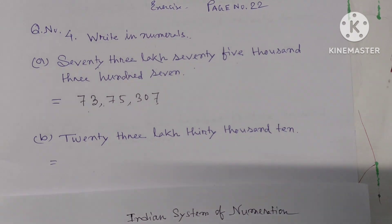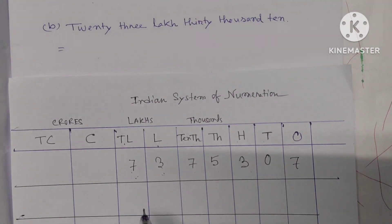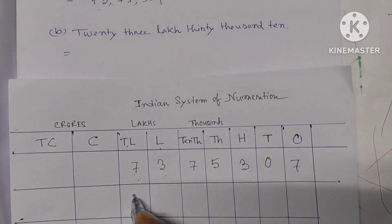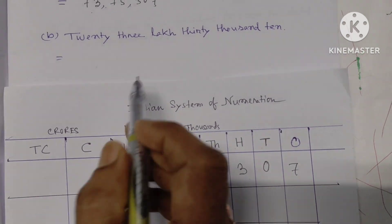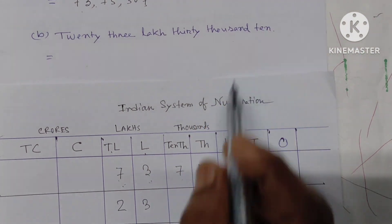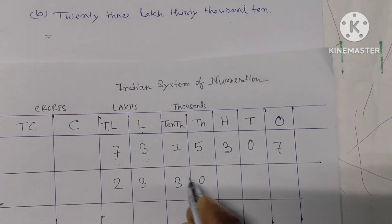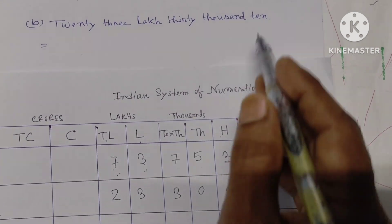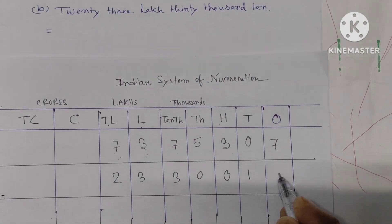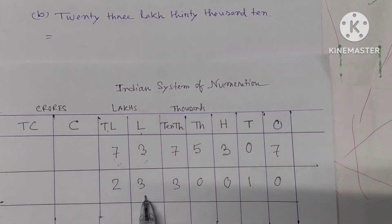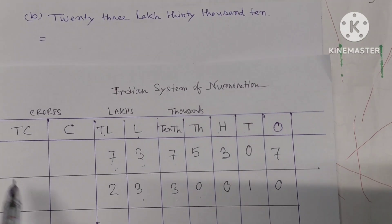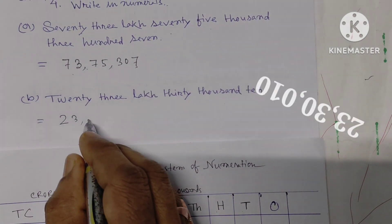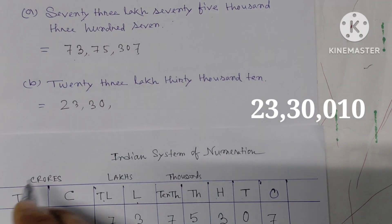Part (b): 23,30,010. We can write this in the chart: 23 lakh in the lakh places, 30 thousand in the ten-thousands and thousands places, 0 hundreds, 1 ten, 0 ones. So the answer is 23,30,010.